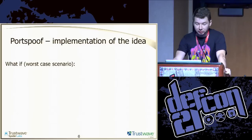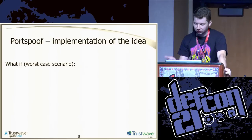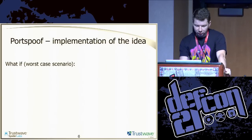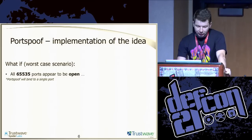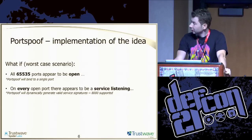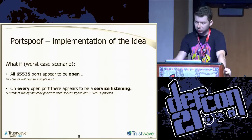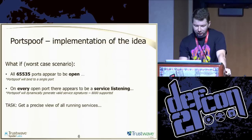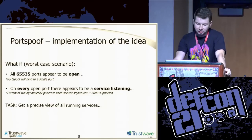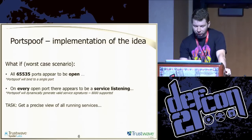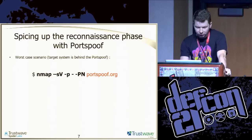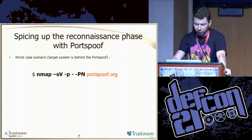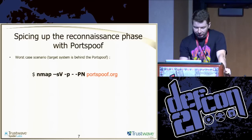So I thought, what would be the worst case scenario for a person scanning or trying to get a view of your running services on your system? What if all of the ports were open? And what if on every port there was actually a valid — or what appears to be a valid — service listing? Your attacker has to basically get a view of all running valid services on your remote system. So I wrote this tool, which is a proof of concept and still a work in progress, that basically implements that idea.